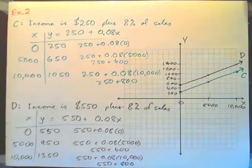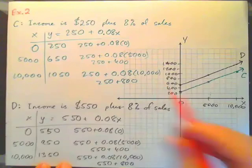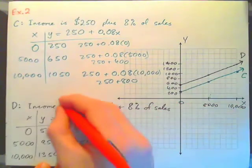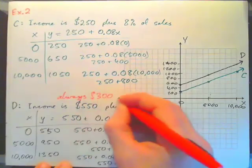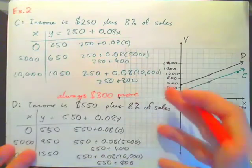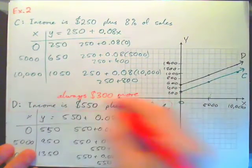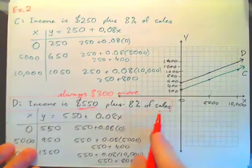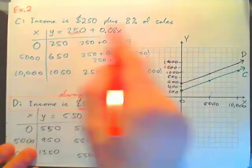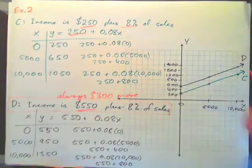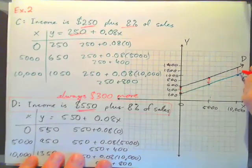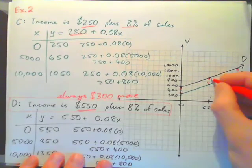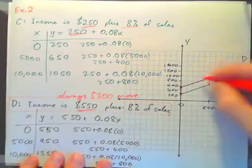And obviously, you know, without having to calculate that, I mean it's nice to calculate it just to see what it looks like exactly, but obviously this one is always $300 more, isn't it? No matter what your sales level is, you would always decide that this is the better package because it gives you $550 plus 8% instead of $250 plus 8%. Okay, so it's always $300 more. And obviously from the graph, you know, at any amount of sales, the income is always $300 more. And so these lines of course are parallel.